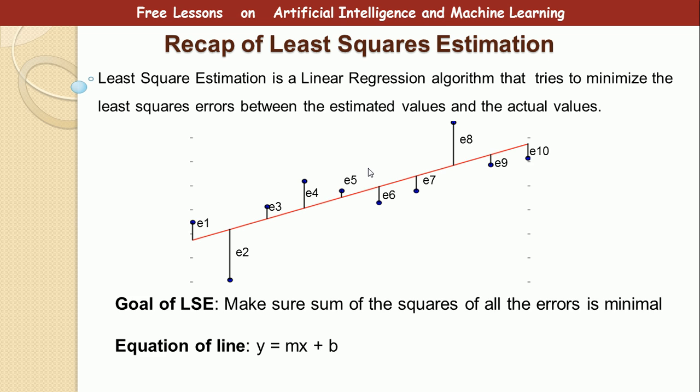First, we are going to review least squares estimation. Remember least squares estimation LSE and maximum likelihood estimation are both regression algorithms. So least square estimation is a linear regression algorithm that minimizes the least square errors between the estimated values and the actual values.